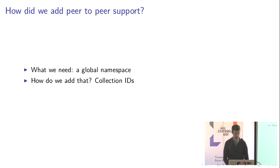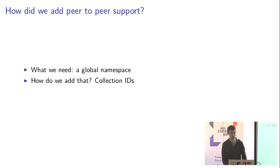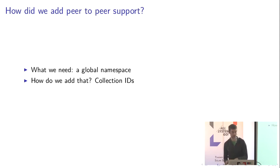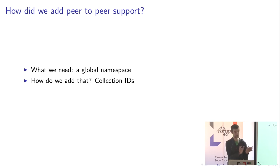So we need a global namespace for refs. We added something called collection IDs — basically a globally unique version of the remote name. You can uniquely identify each repository and mirrors of it around the world with a collection ID. If gedit were published by the gedit developers, they would set a collection ID. If GNOME mirrored it, they would copy the same collection ID so refs from either are considered equal. If I published my own gedit, I would choose a different collection ID. Taking a collection ID and a ref as a tuple makes it globally unique, and you can use those to look up and query for updates wherever.